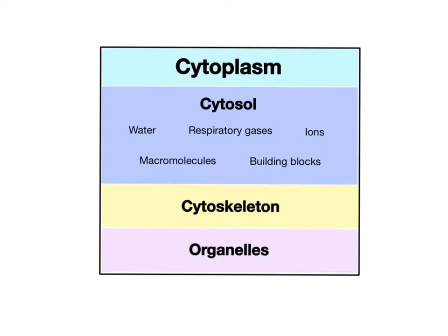The cytoplasm is the semi-fluid material inside a cell that supports the cytoskeleton and organelles. This gel-like substance is made up mostly of the cytosol, the cell solution, and primarily consists of water containing a variety of dissolved chemicals such as the respiratory gases oxygen and carbon dioxide, many ions, macromolecules like proteins and carbohydrates, and their building blocks. Think of the cytoplasm as the life-supporting medium of the cell.